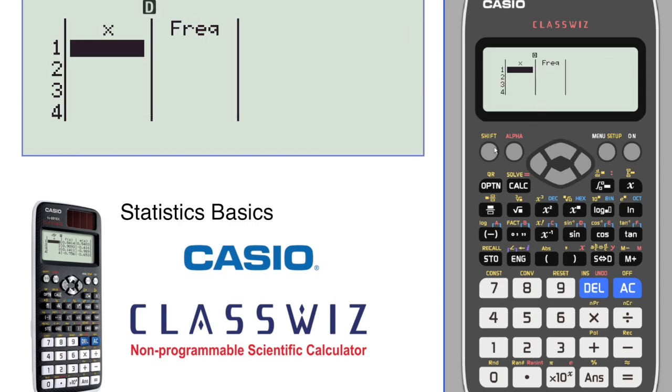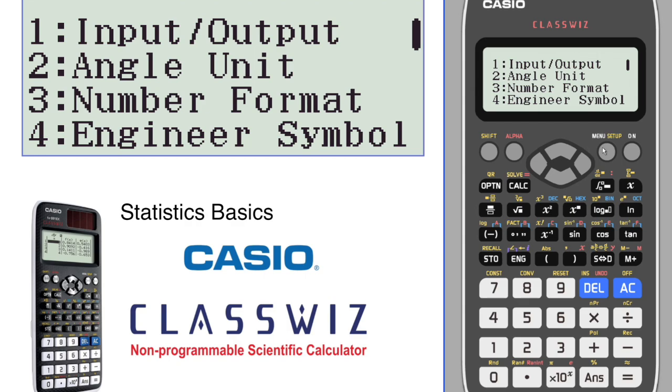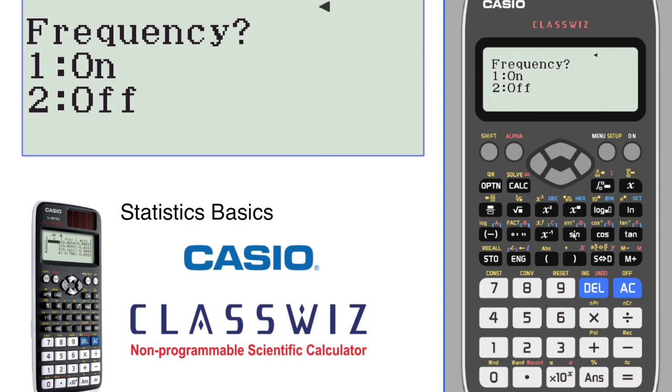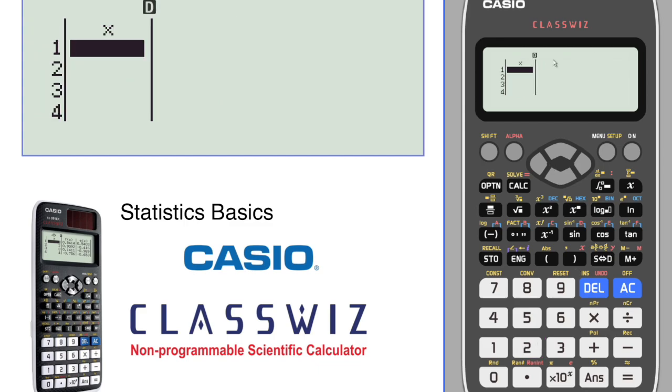Notice that our frequencies are turned on. If we want to change that, go into your setup, toggle down, do stats which is number three. If we turn it off, your frequencies are gone and are assumed to be one.